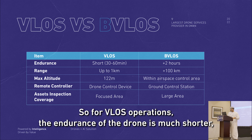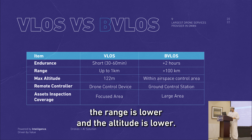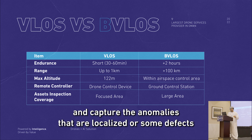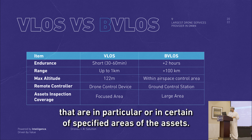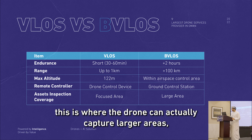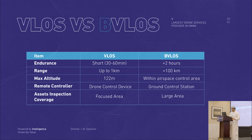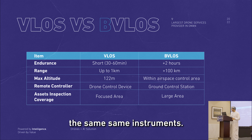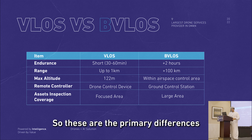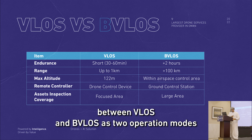For VLOS operations, the endurance of the drone is much shorter, the range is lower, and the altitude is lower. However, it allows you to focus on a specific area and capture the anomalies that are localized, or defects in certain specified areas of the assets. On the other hand, for BVLOS, a drone can capture and scan larger areas in a given time frame using the same instruments, within the airspace control area. These are the primary differences between VLOS and BVLOS operation modes.